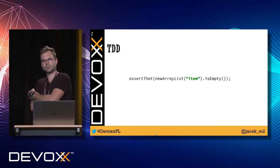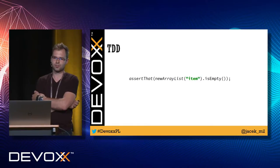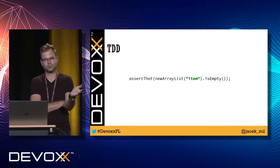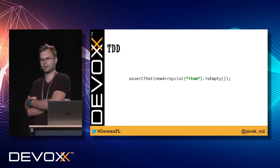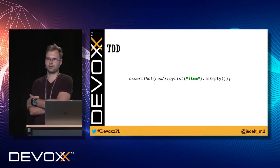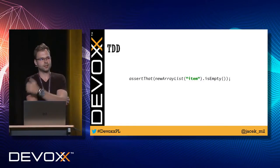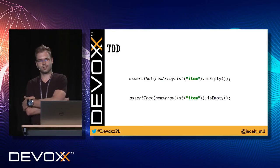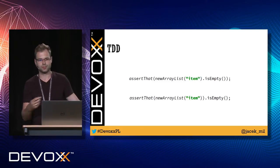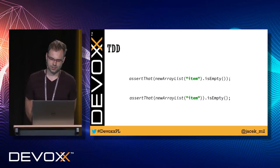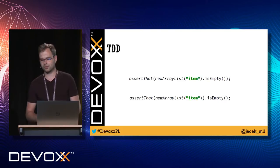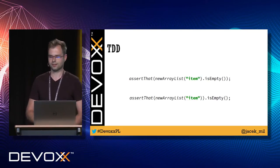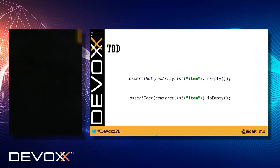Third: TDD. I don't trust tests I haven't seen turn red and then green. If a test was always green, I have no proof it's actually testing anything. Here's an example: calling `isEmpty()` on an ArrayList versus calling `isEmpty()` on AssertJ — one is an assertion, one is not. You have to see the test red first to know it's testing something. Writing tests without assertions is a great way to inflate coverage numbers, but it makes no sense.